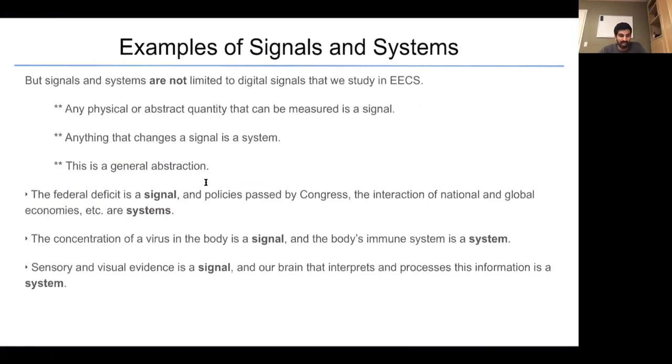But signals and systems are not limited to digital signals that we study in EECS. Any physical or abstract quantity that can be measured is a signal. Anything that changes the signal is a system. For example in economics the federal deficit is a signal. Policies that are passed by Congress, the interaction of national and global economies, these are systems. Perhaps relevant to our current times, the concentration of a virus in the body today is a signal. And our immune response is a system that modifies or acts upon that signal.